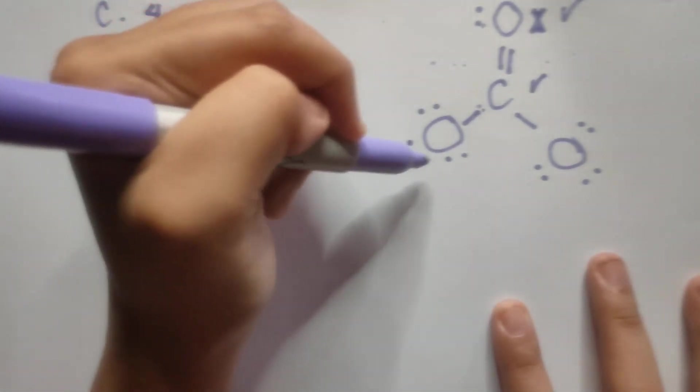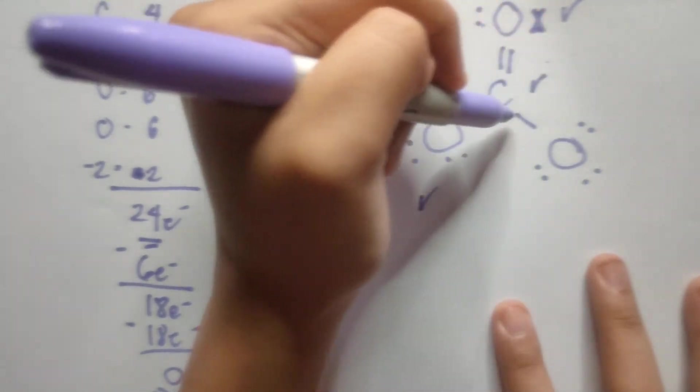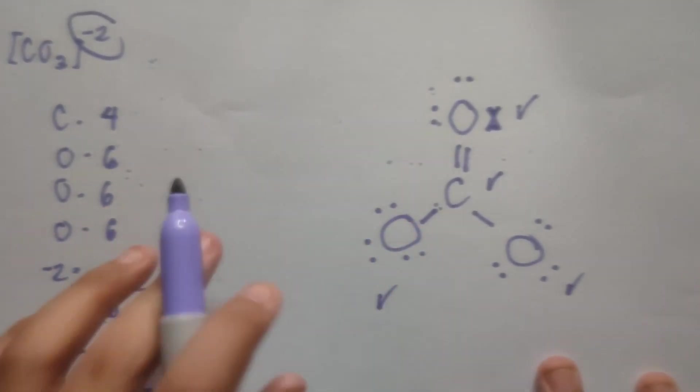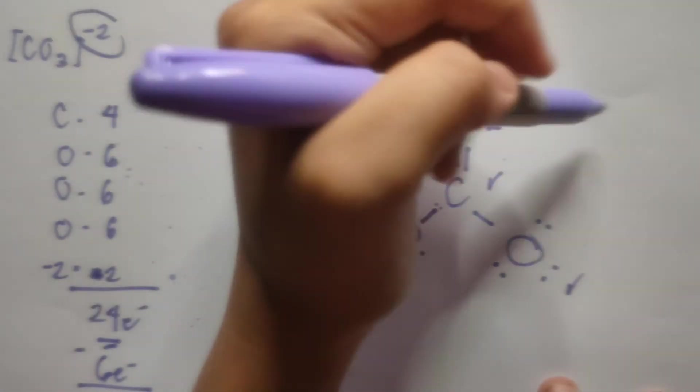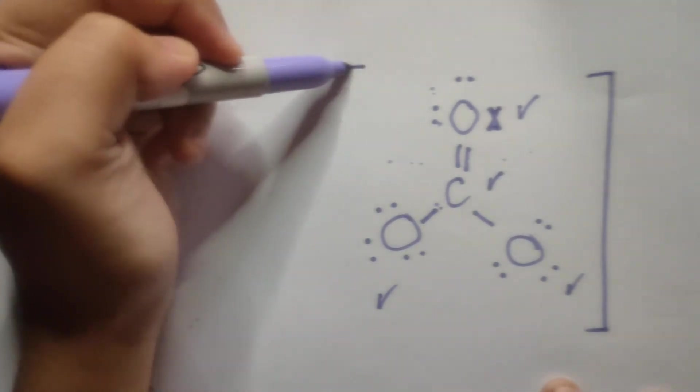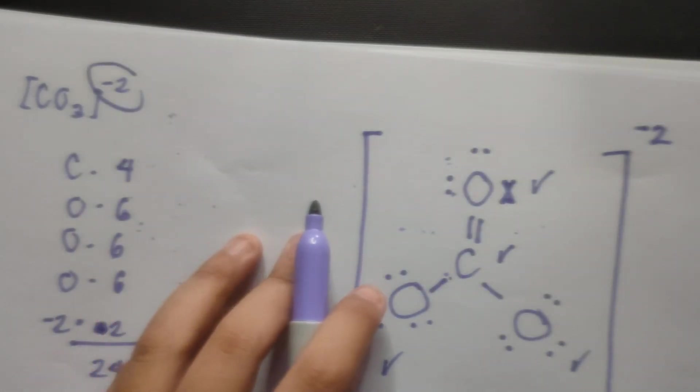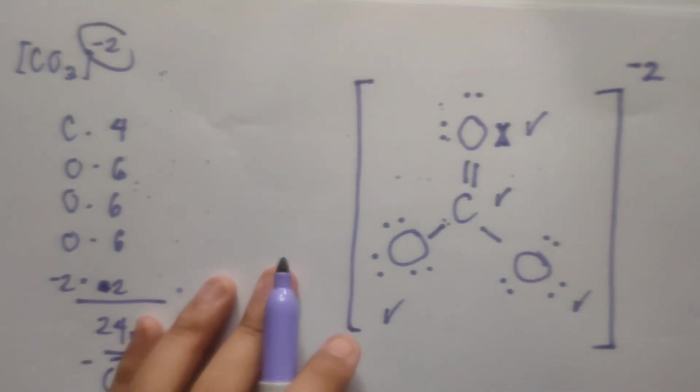This oxygen, 1, 2, 3, 4, 5, 6, 7, 8. Octet rule check. This oxygen, 1, 2, 3, 4, 5, 6, 7, 8. It also follows the octet rule. But again, the thing is this is a charged molecule. So it's important to add the bracket and of course add the charge. Just to take note, just to note that this is a charged molecule.